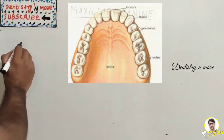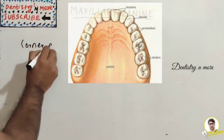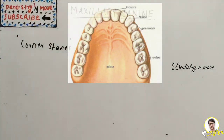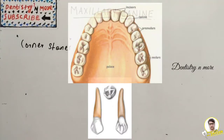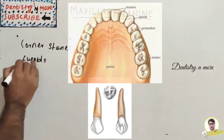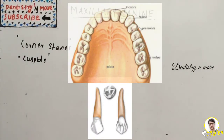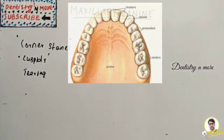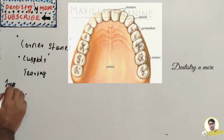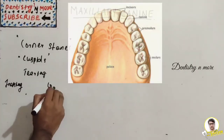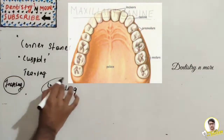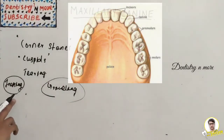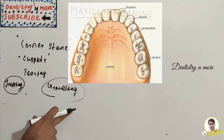Canines are commonly known as the cornerstones of dentition because they are placed at the corner of the mouth. They have a single pointed cusp, so they are also known as cuspids. The canine's role in mastication is mainly tearing, which is intermediate between the incising action of anterior teeth and the grinding action of posterior teeth — showing how well balanced our dentition is.